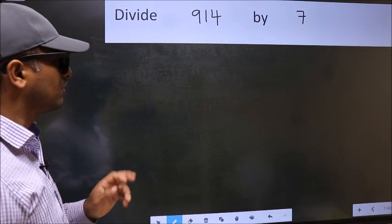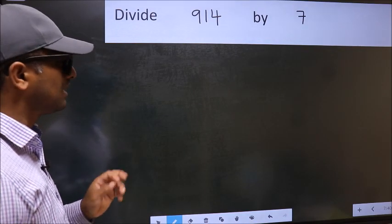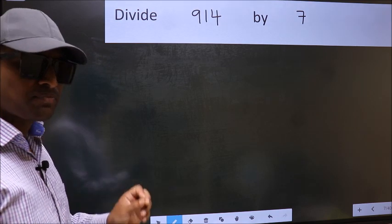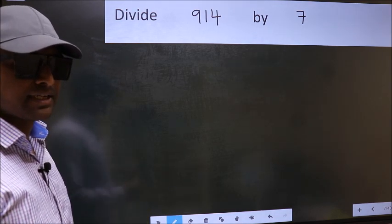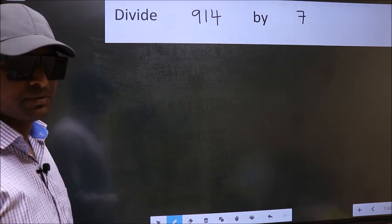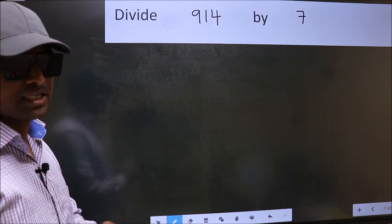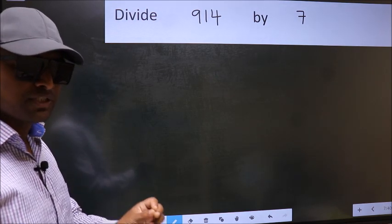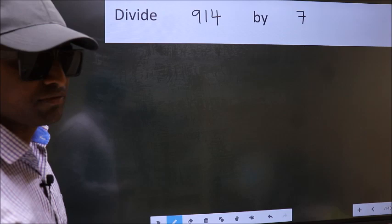Divide 914 by 7. While doing this division, many do this mistake. What is the mistake that they do, I will let you know. But before that, we should frame it in this way.